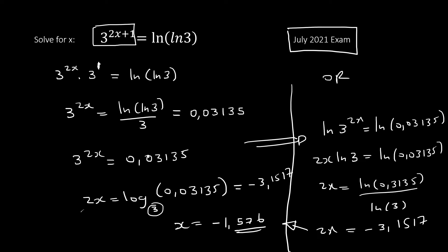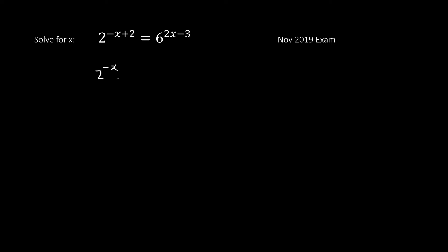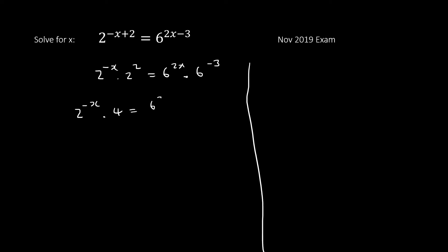Here's the next example — a bit trickier. First, we can separate: this side is 2^(−x+2) and the other is 6^(2x−3). Now we need to deal with the exponent −3. If we compute 6^(−3), that gives 1/216.